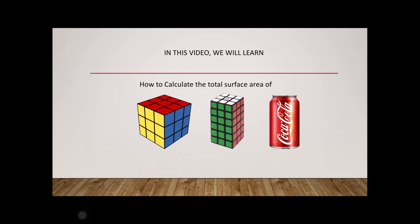We are going to cover how to calculate the total surface area of three main solids: number one, cube; number two, cuboid; and number three, cylinder.